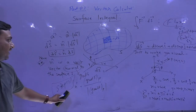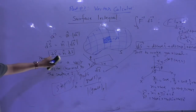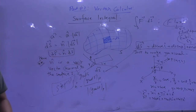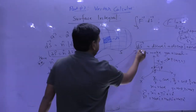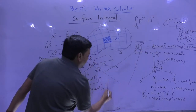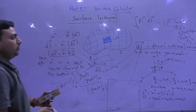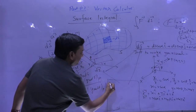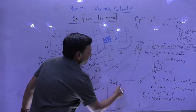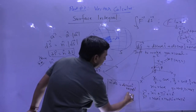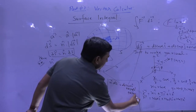Whatever surface is given, you need to find the unit normal vector to that surface — which is grad S divided by modulus of grad S. ds vector will be represented by n̂ ds. So if I replace ds vector by n̂ ds, this becomes: ds cos α î + ds cos β ĵ + ds cos γ k̂.